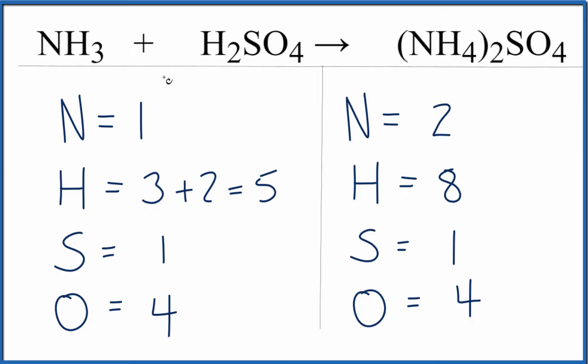It's pretty easy to do. So I could put a two in front of the NH3 and then I could update my numbers here. So now I have the one times the two, I have the two nitrogens, and that's resolved.